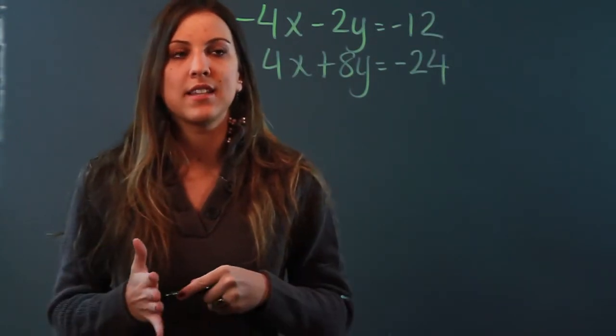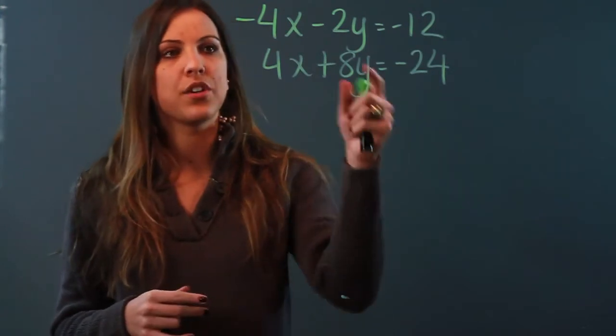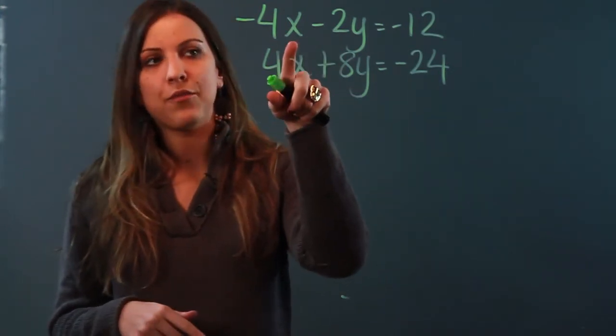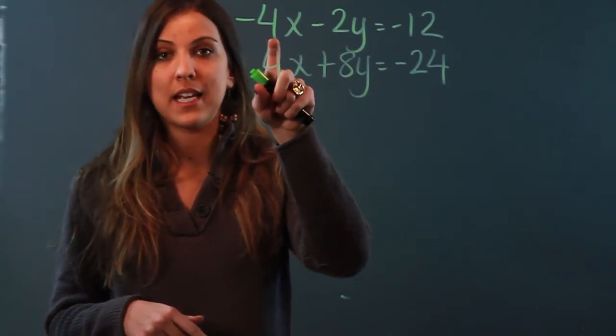So substitution is not a wrong method, you can still do it but it's going to take you more time because you're going to have to, if you want to solve for x here you'd have to add 2y to both sides and then you'd have to divide by negative 4 to get x by itself.